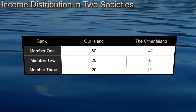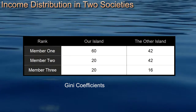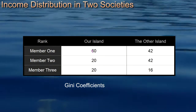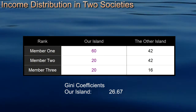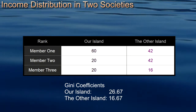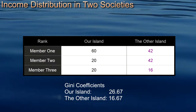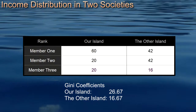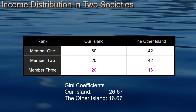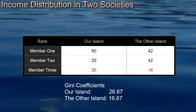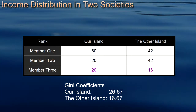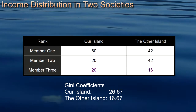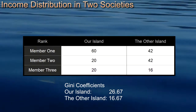You can go back to film 15 and calculate the Gini coefficient for the other island. Using the formula from an earlier film, our island has a Gini coefficient of 26.67, while the other island has a coefficient of 16.67 — the closer to zero, the more evenly income is distributed. However, the poorest member on our island has a 25% higher income than the poorest member on the other island, where income is more evenly distributed. Income distribution and poverty are closely linked, but they are distinct issues.